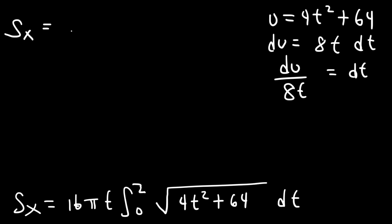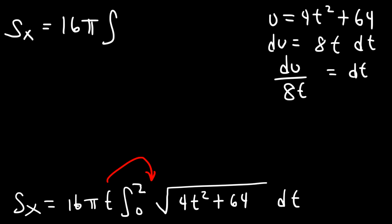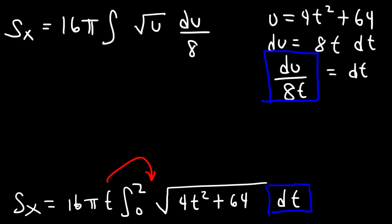So the surface area about the x-axis is going to be 16π. I'm going to take the t and move it inside the integral. The integral will change its limits of integration because we're replacing with u. So this is going to be the square root of u, and dt is replaced with du over 8t. We can see that t will cancel.